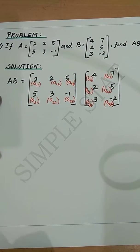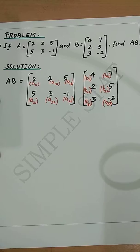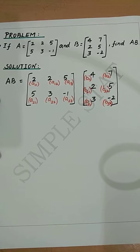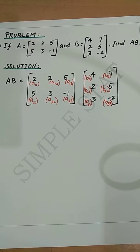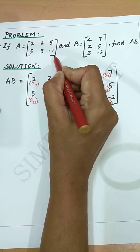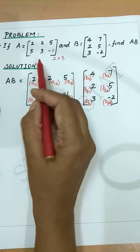Let's proceed with an example. If A = [[2, 2, 5], [5, 3, -1]] and B = [[4, 7], [2, 5], [3, -2]], find the product AB. Before multiplying, let's verify the condition. Here A is a matrix of order 2×3, that is it has two rows and three columns.